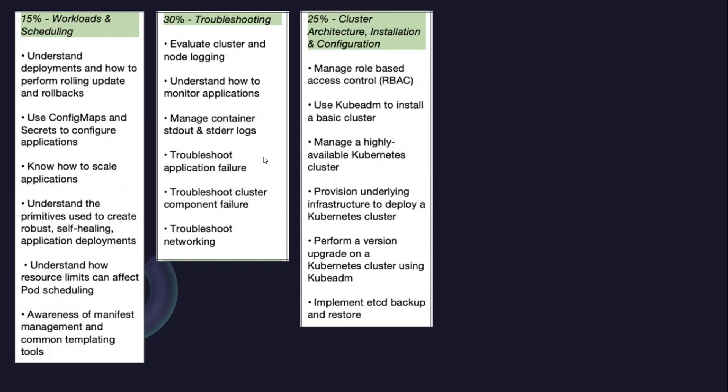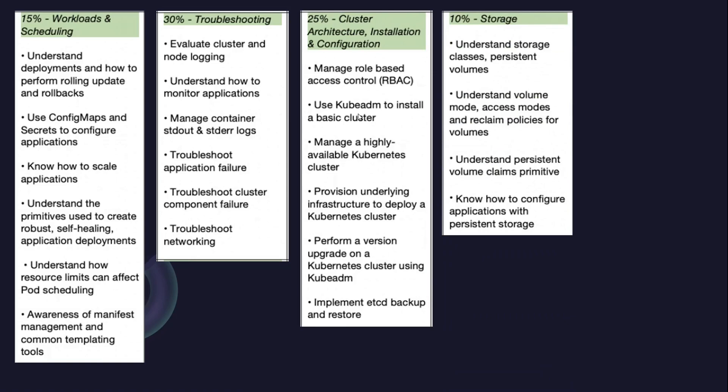The third section is cluster architecture, installation and configuration, where you need to understand role-based access control and how to implement it. You also need to understand how to do kubeadm installation, basic cluster setup, and high availability Kubernetes clusters. The fourth section is storage, where you need to understand each component — creating persistent volumes, adding volumes, creating persistent volume claims, and how to configure volumes into applications.